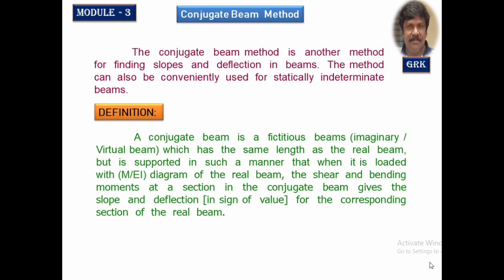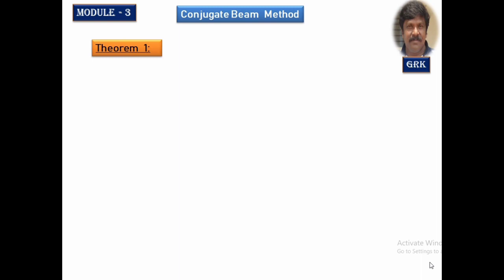Whatever you observed in the earlier session on the moment area method, whether it is problems on simply supported beams or cantilever beams, we used to draw the bending moment M/EI diagram. That M/EI diagram itself is the loading diagram that will be acting on the conjugate beam, and the shear force and bending moment at any section give the slope and deflection at that section. Let us try to understand all these things with examples, and first understand the two theorems developed by Mohr.